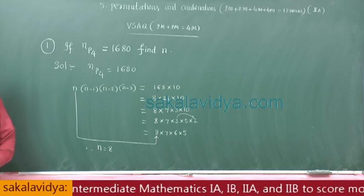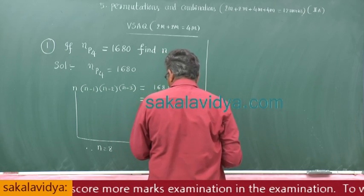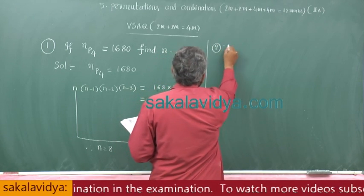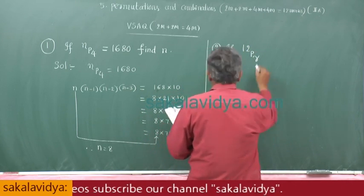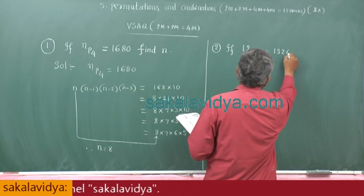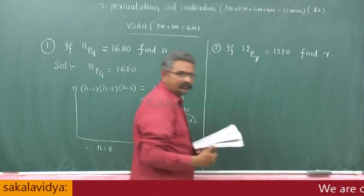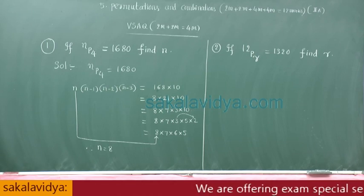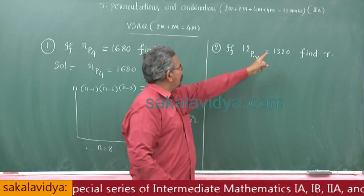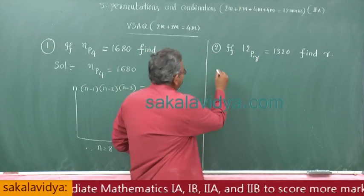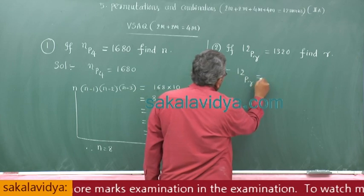Now let us move to the next problem. Second problem: if 12Pr is equal to 1320, find r value. Here r places are filled with 12 objects, that is equal to 1320. First in this problem, 12Pr equal to 1320.